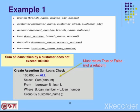The assertion checks that 1,000,000 is greater than or equal to all values. We select the sum of amount from borrower B and loan L — those are 2 tables. The join condition is B.loan_number equal to L.loan_number.